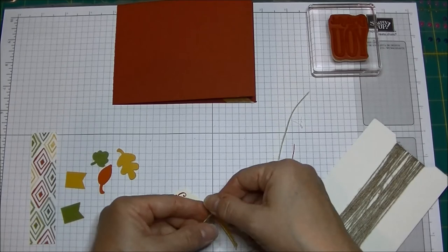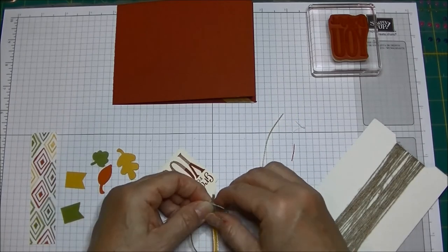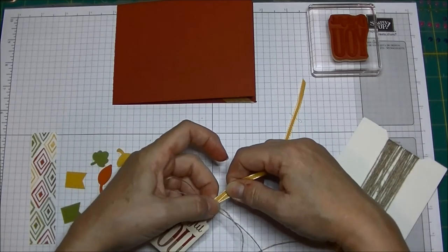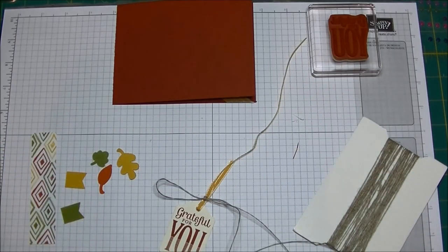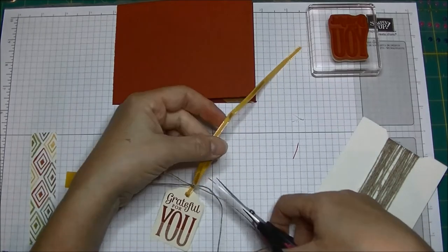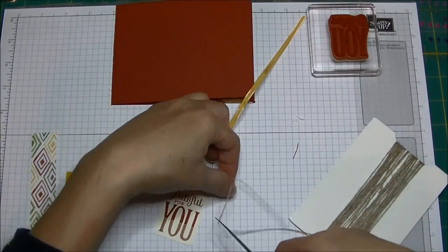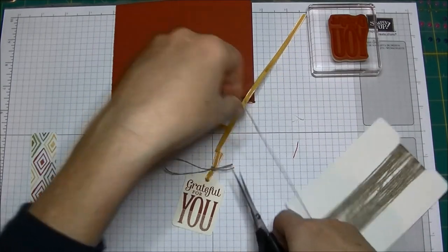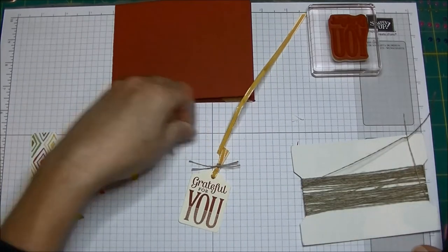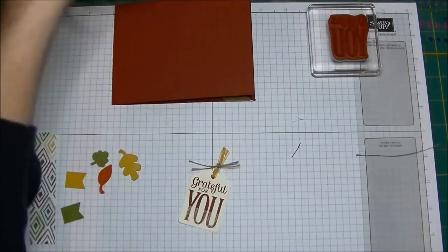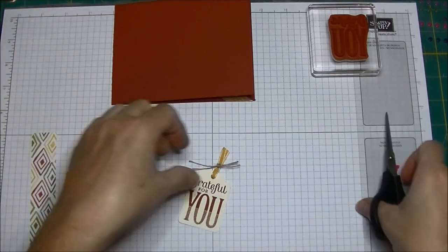Now the sketch really calls for the on film thinlits framelits, but I don't love those, so I decided to use a tag here instead because I love this. I love the tag and I haven't really used it very much yet. I think it's a fun little product, so I wanted to give that a try.